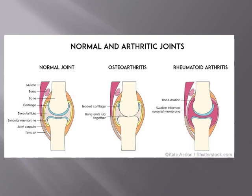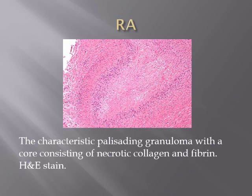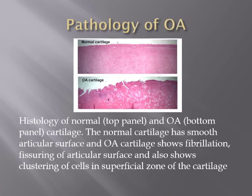Microscopically, the characteristic palisading granuloma with a core of necrotic collagen and fibrin is very specific to rheumatoid arthritis. In osteoarthritis, the cartilage shows flaring and fissuring of the articular cartilage surface, and clustering of cells in the superficial zone of the cartilage, caused by erosion and decay of the joint cartilage, leading to continuous rubbing and friction between opposing bone edges.